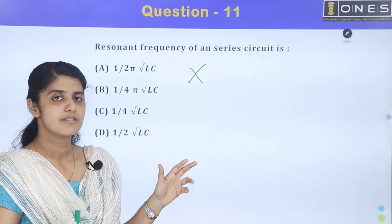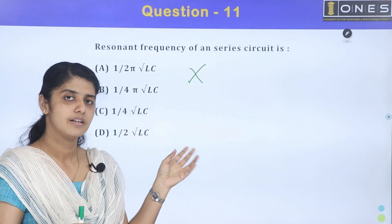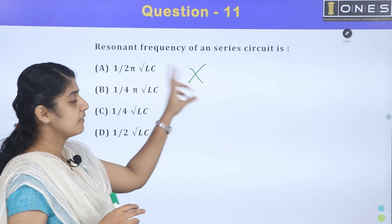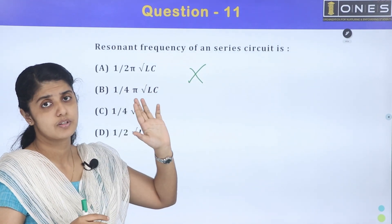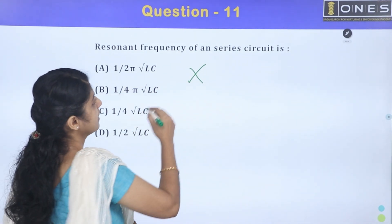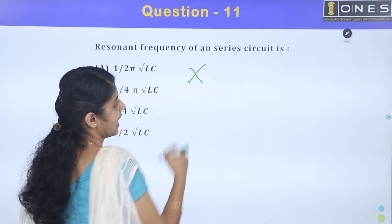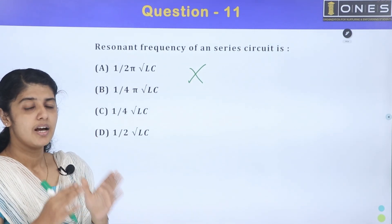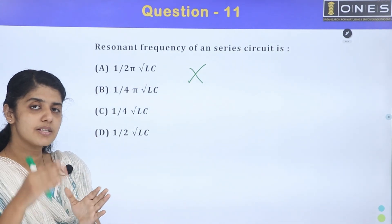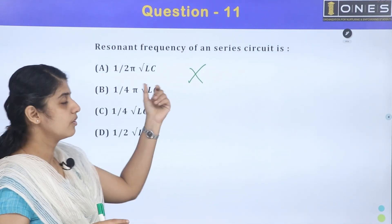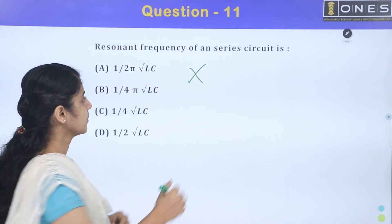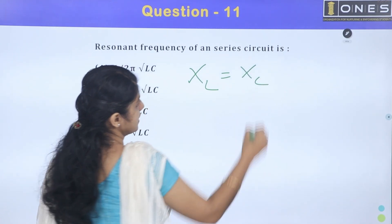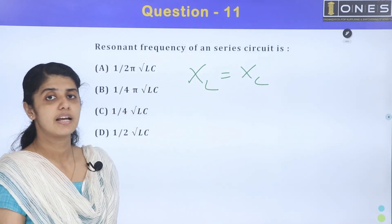Resistance is one property. Inductance and capacitance — if we go to those terms, it is reactance: inductive reactance and capacitive reactance. These are the components. In the circuit, they will have an opposite effect.